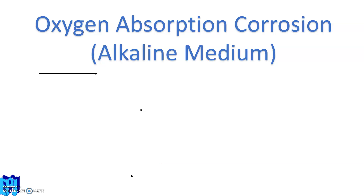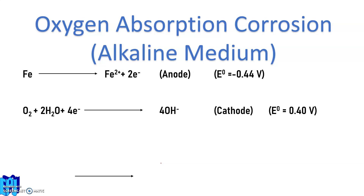Now, oxygen absorption corrosion in alkaline medium. The anode reaction is the same: Fe → Fe2+ + 2e⁻, that is minus 0.44 V. The cathode reaction is different in alkaline medium: O2 + 2H2O + 4e⁻ → 4OH⁻, with cell potential value of 0.40 V. The mechanism is the same — Fe2+ ions are produced at the anode, and the electrons absorbed by the water containing oxygen form 4OH⁻.